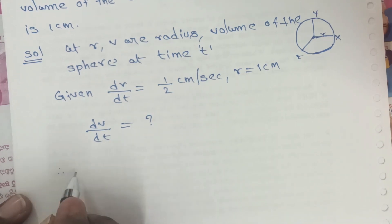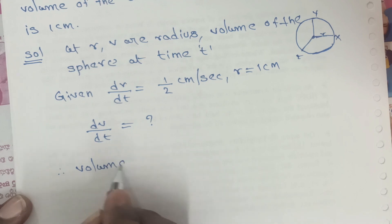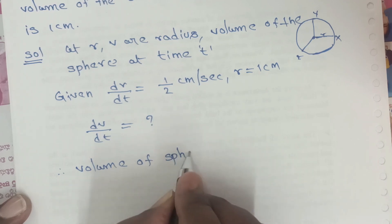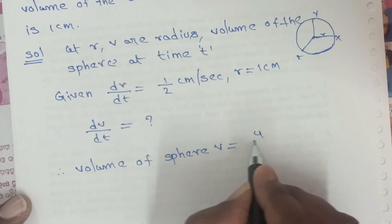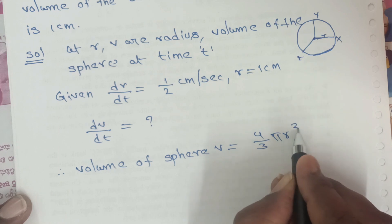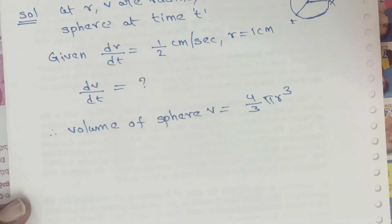Volume of the sphere: V equals 4/3 π r³. Differentiating both sides with respect to t, we get dv/dt equals 4/3 π times the derivative of r³.